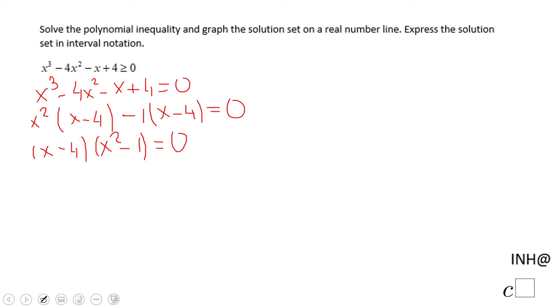You have two choices here: you can solve this polynomial equation or you can keep factoring, which I will do here. x - 4, and x² - 1 is (x - 1)(x + 1) in factored form equals 0. So now we have the factored form, we can use the zero product property and we get x = 4, x = 1, and x = -1.